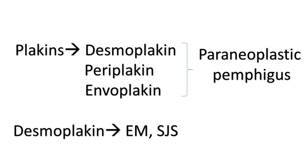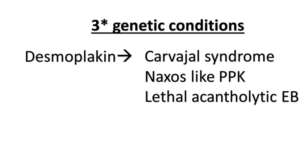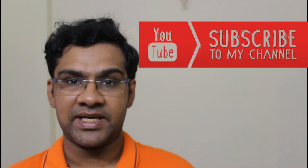Coming to defects associated with the plakin family: the most common autoimmune disease targeting desmoplakin, periplakin, and envoplakin is paraneoplastic pemphigus. Desmoplakin is also immunologically targeted in erythema multiforme and Stevens-Johnson syndrome. For genetic conditions, there are associated defects in desmoplakin: Carvajal syndrome, which features palmoplantar keratoderma that can be striate or diffuse with woolly hair and nail abnormalities; a Naxos-like Carvajal syndrome; and lethal acantholytic epidermolysis bullosa, in which the tail end of desmoplakin is lost due to genetic defect.